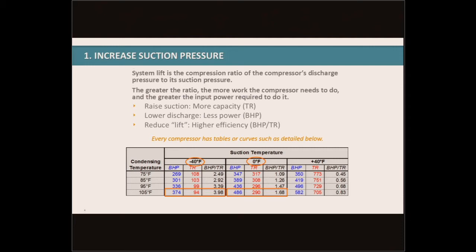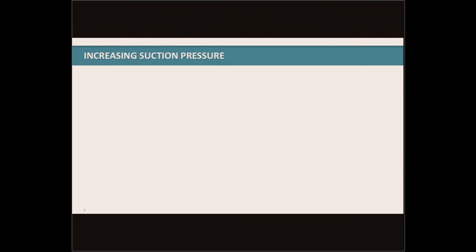When we look at adjusting the suction pressure, we're going to do it incrementally. If we're at a zero pound suction pressure, we want to see if we can go up to two or four pounds. The rule of thumb for calculating savings: there's about a 2% compressor efficiency gain per degree Fahrenheit increase in suction temperature — not per pound increase, but per degree Fahrenheit increase.